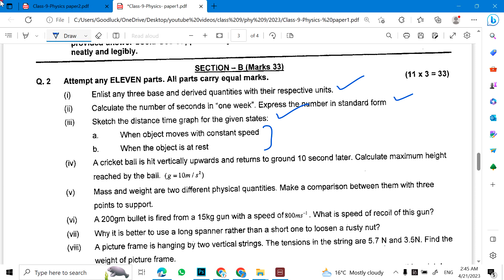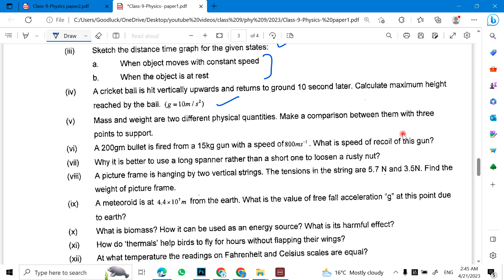A cricket ball is hit vertically upward and returns to the ground 10 seconds later. Calculate the maximum height reached by the ball with gravity 10 m/s². Then you will have mass and weight are two different physical quantities. Make a comparison between them with three points to support.